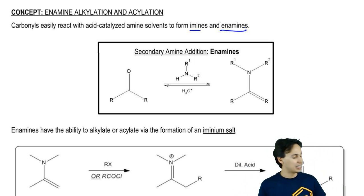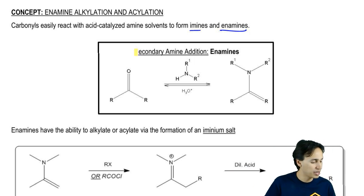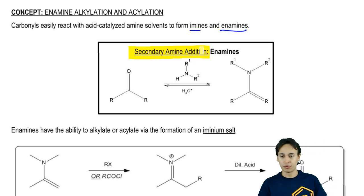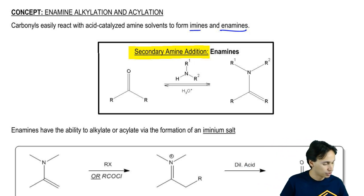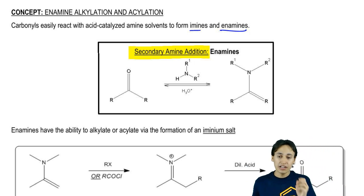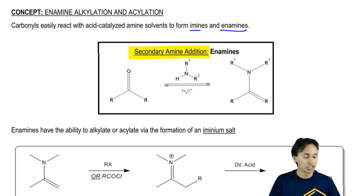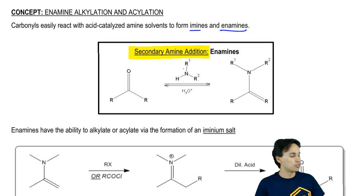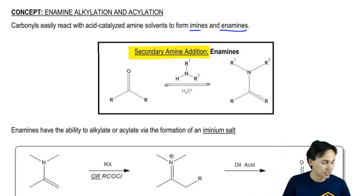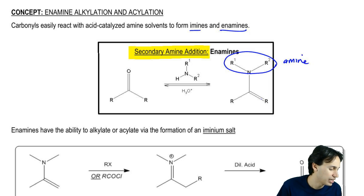Specifically, the one that we care about for this page is secondary amines because, as you might remember or maybe you haven't gotten there yet, secondary amines are going to react with ketones to specifically give enamines. Enamine has a part amine at the top and alkene at the bottom, hence the name.